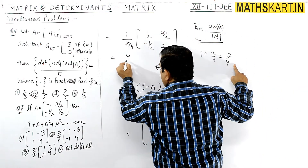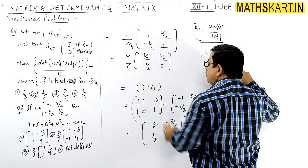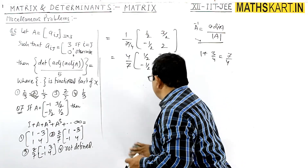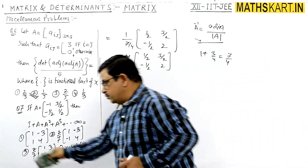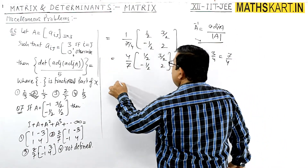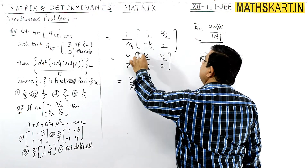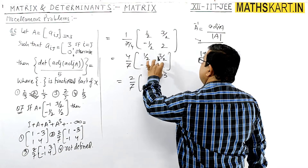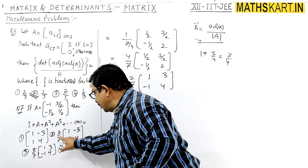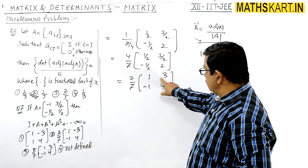Dividing by 7/4 means multiplying by 4/7. The adjoint of (I − A) is found by swapping diagonal elements and changing sign of off-diagonal elements. The matrix was [2, −3/2 / 1/2, 1/2], so the adjoint is [1/2, 3/2 / −1/2, 2]. Multiplied by 4/7, this gives (2/7) × [1, 3 / −1, 4].